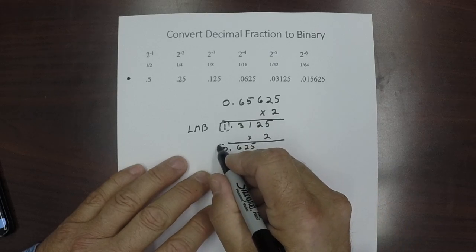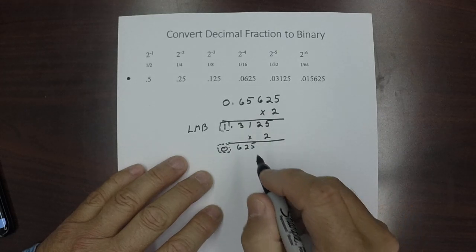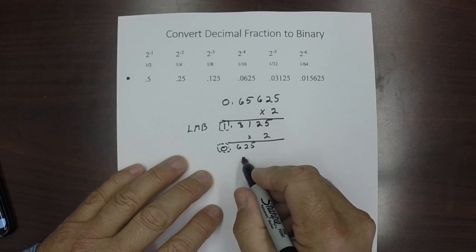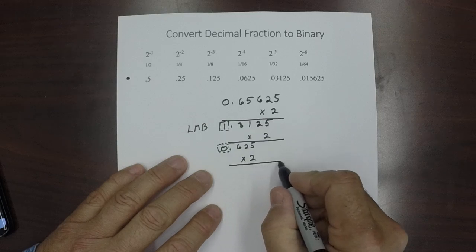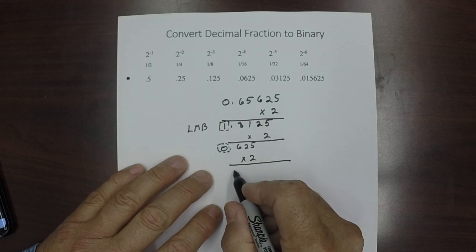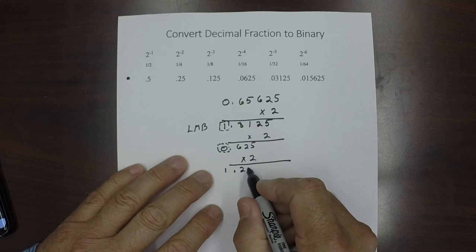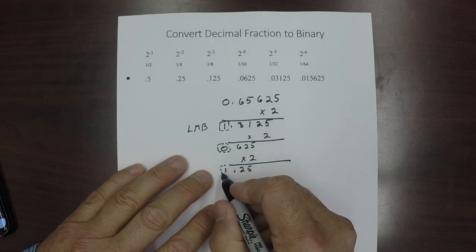We're going to multiply that number by 2, and that is going to be 1.25. That's our next bit.